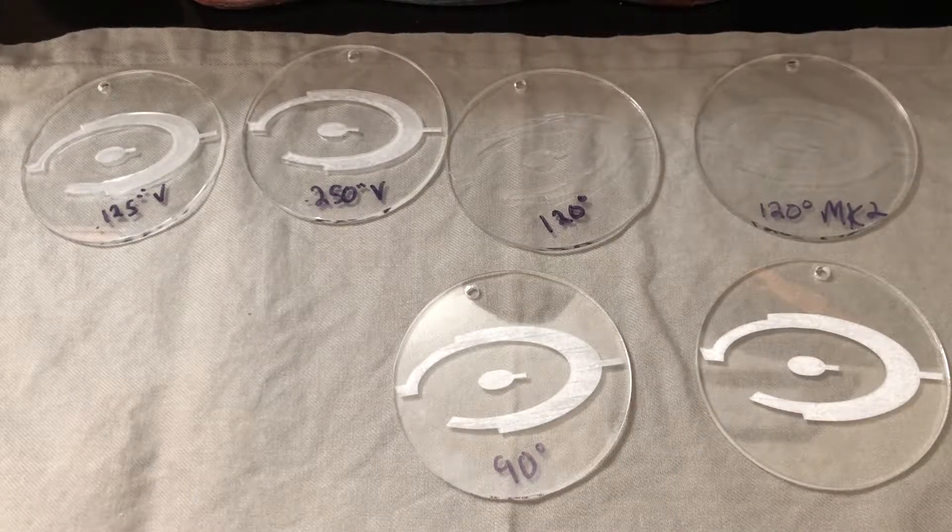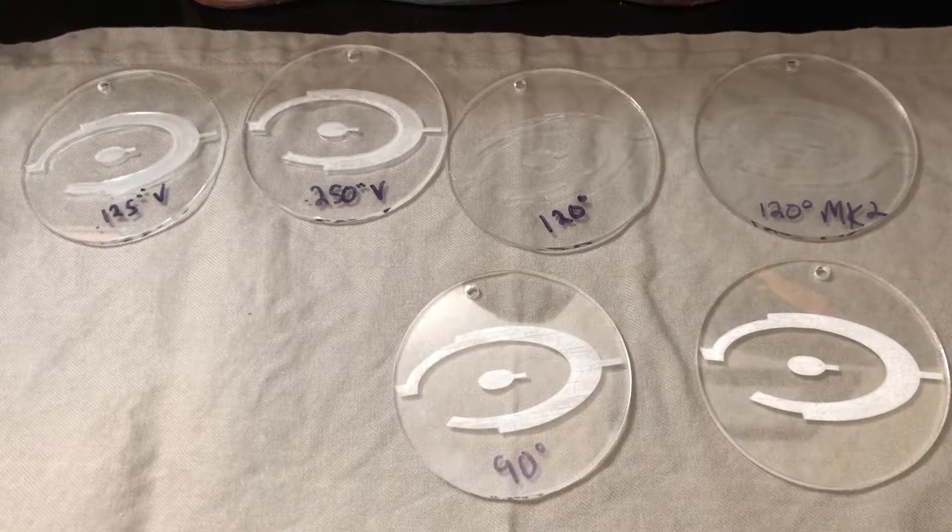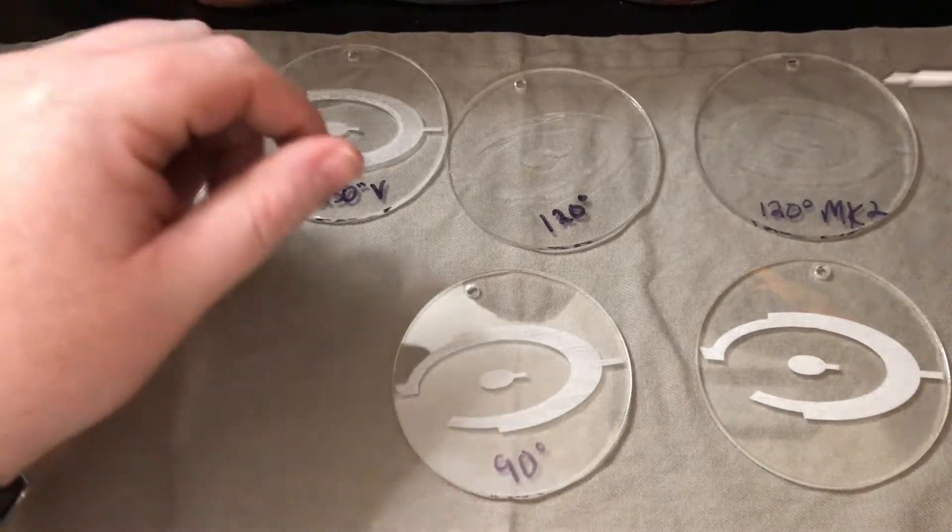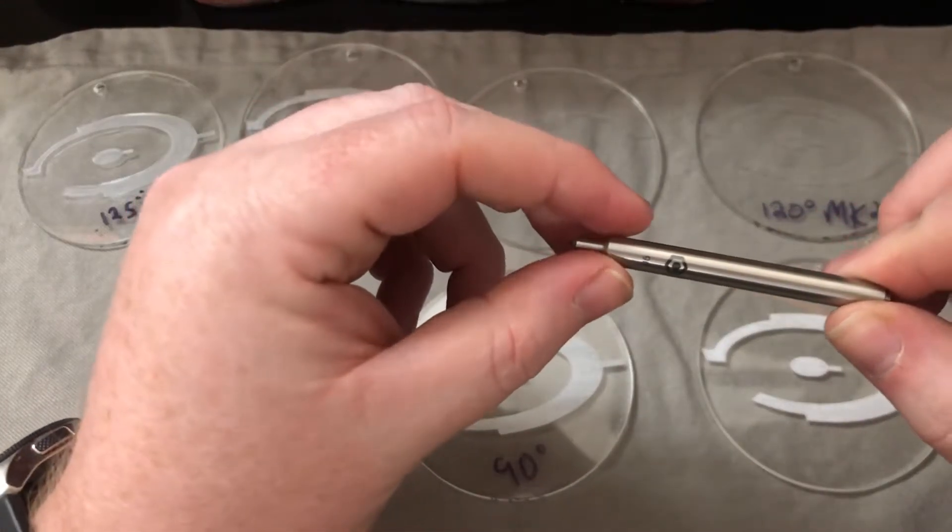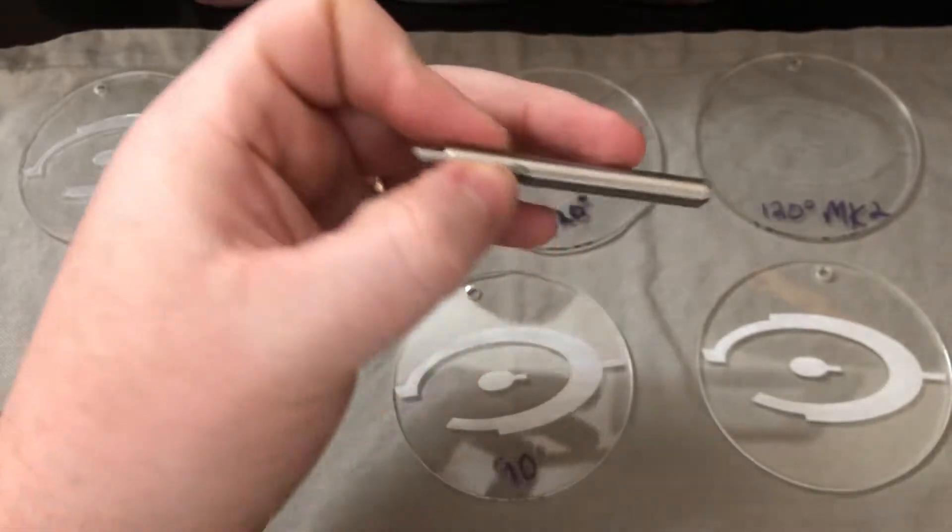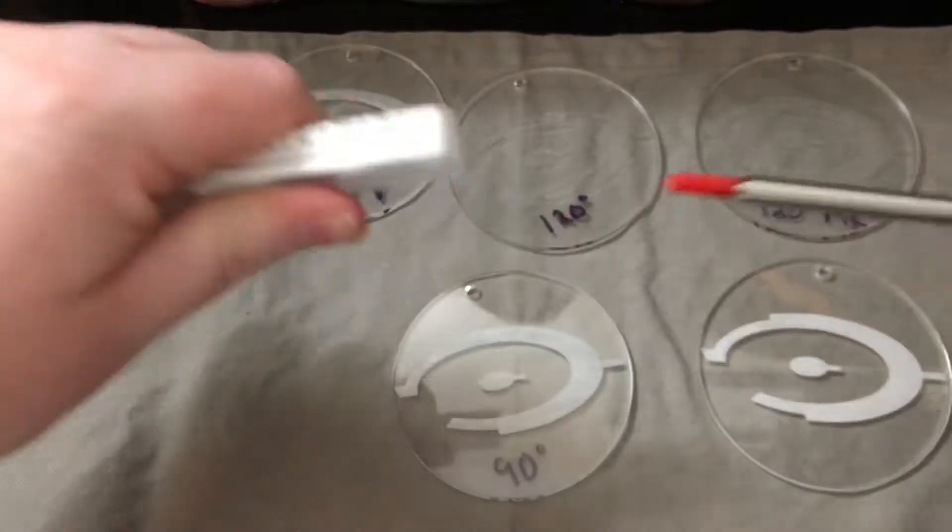What's going on guys, I just wanted to share my thoughts on some new tools that I picked up. The Carbide 3D MC Etcher drag engravers, they come in both 90 degree and 120 degree tip angle.